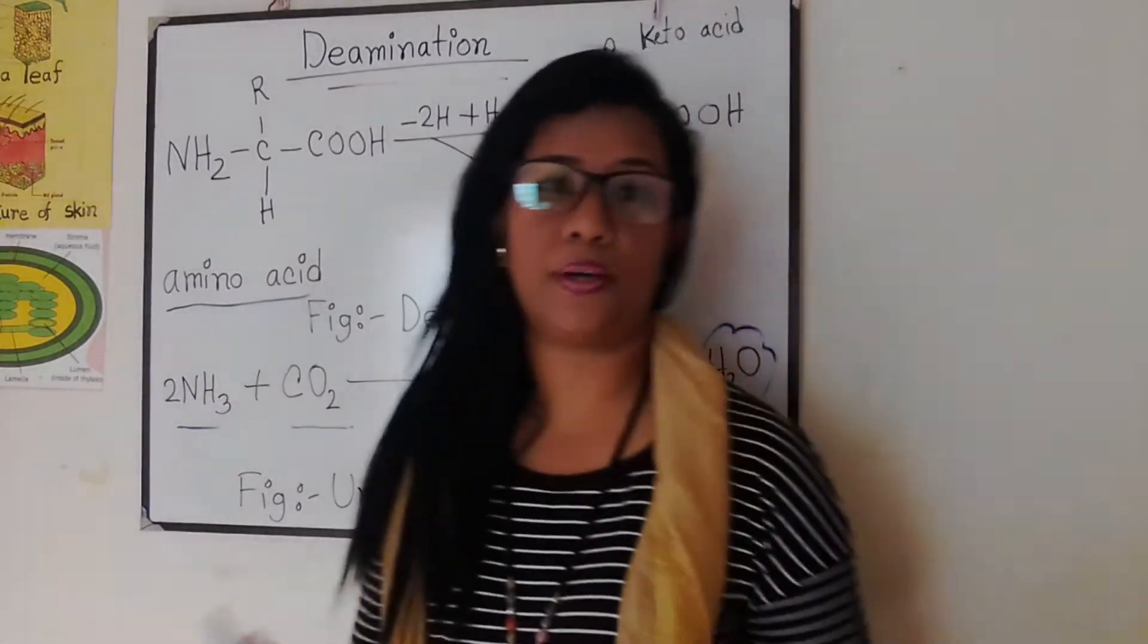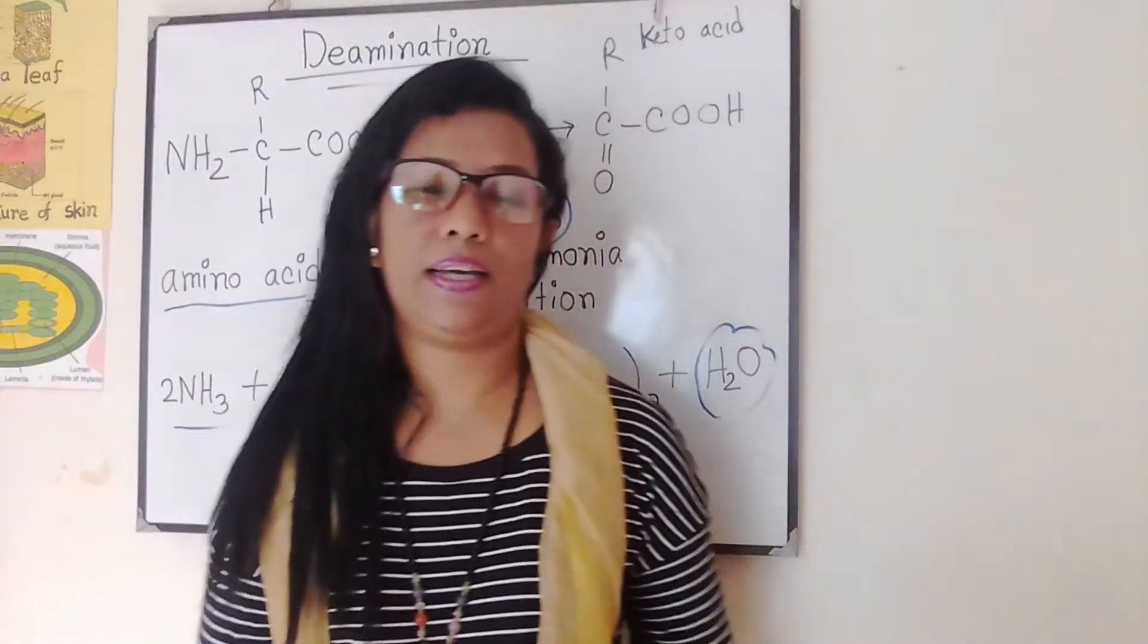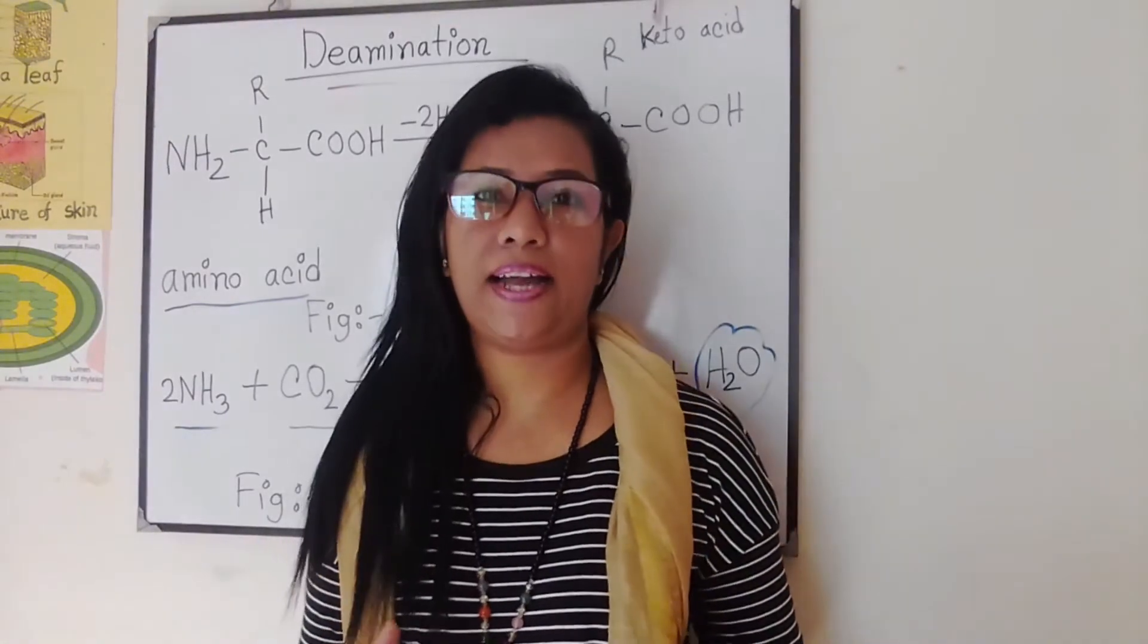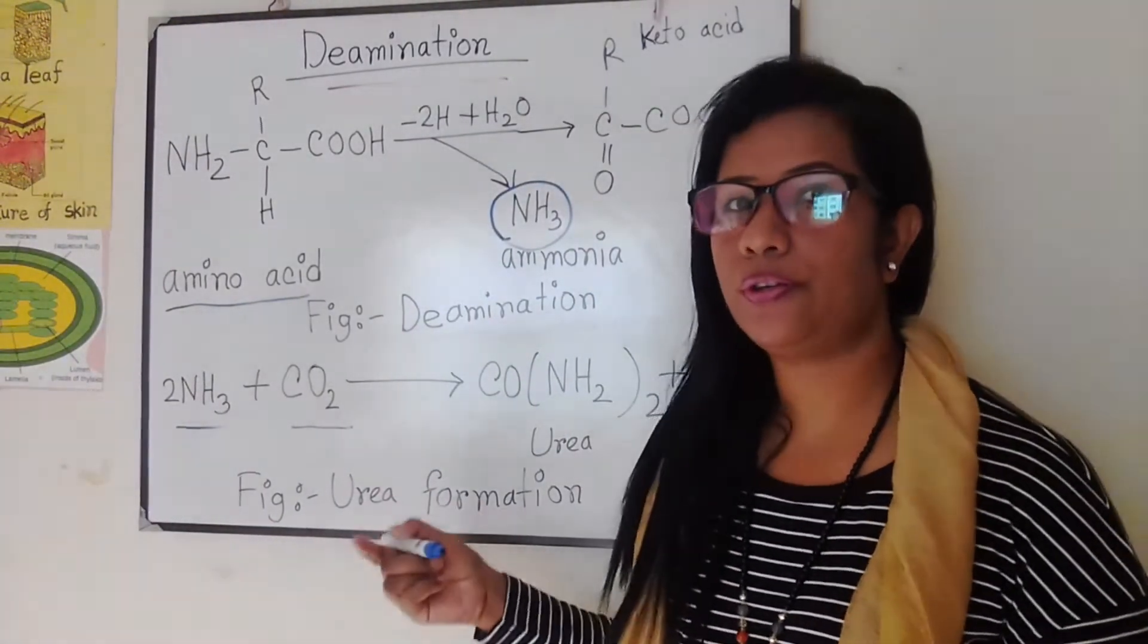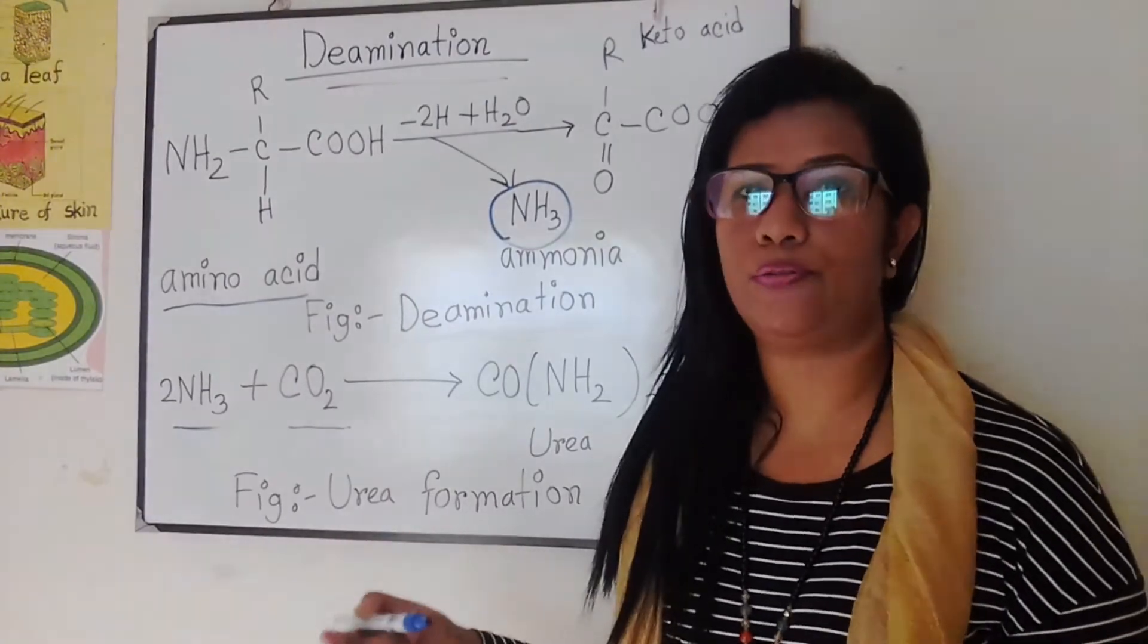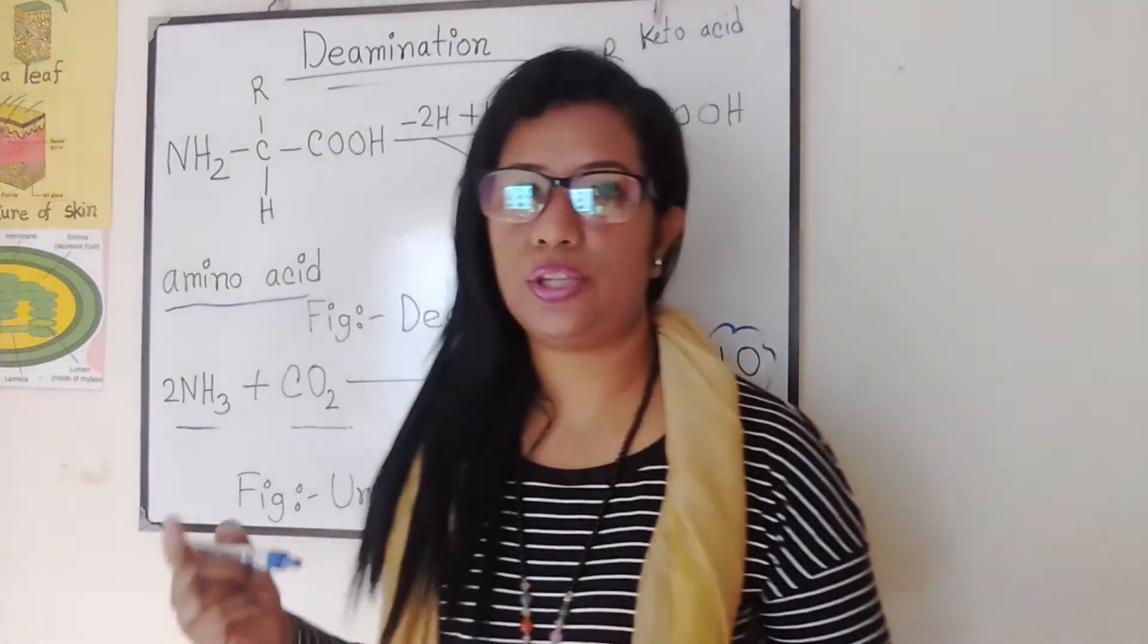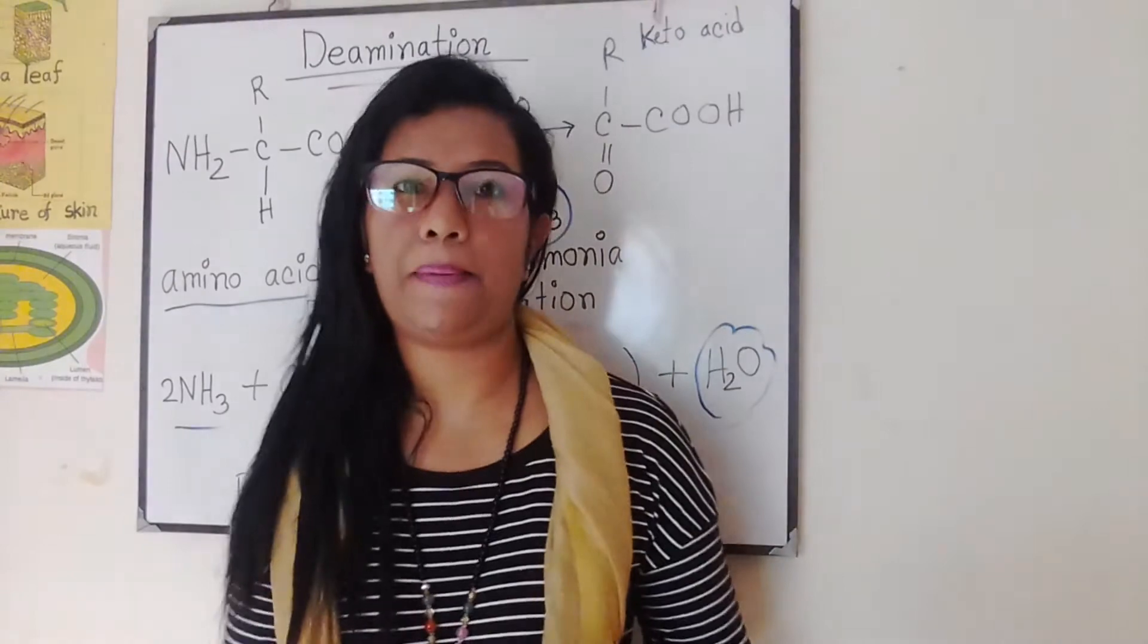This one is water. These are simplified as shown here. An adult human produces around 25 to 30 grams of urea per day.